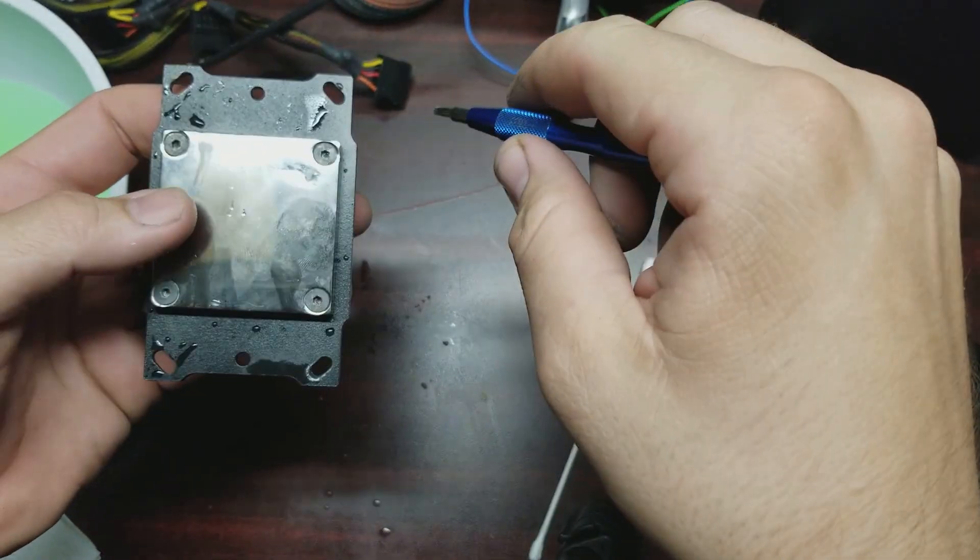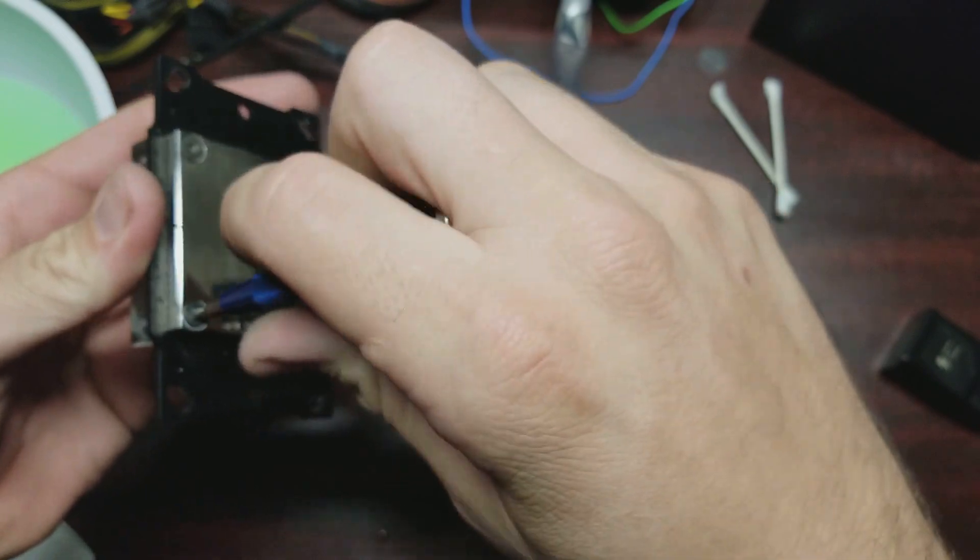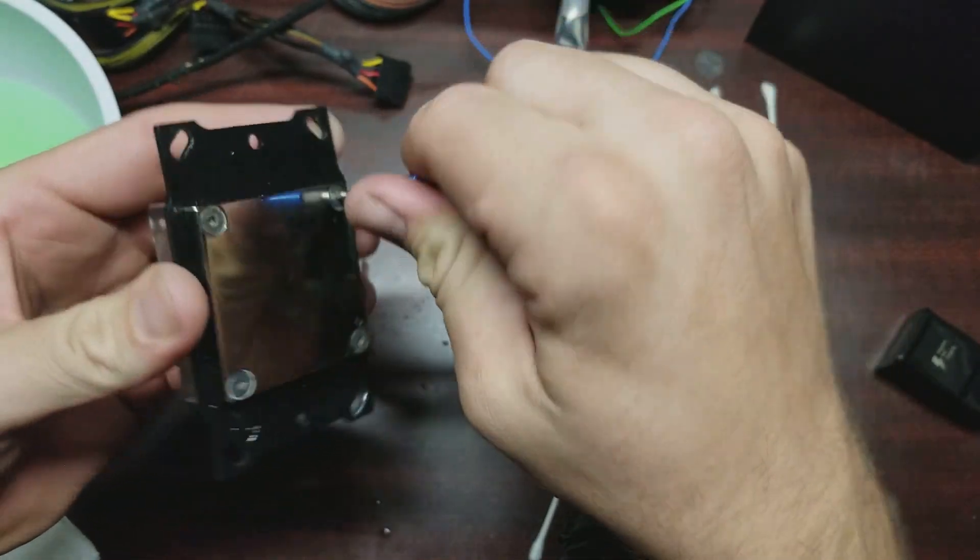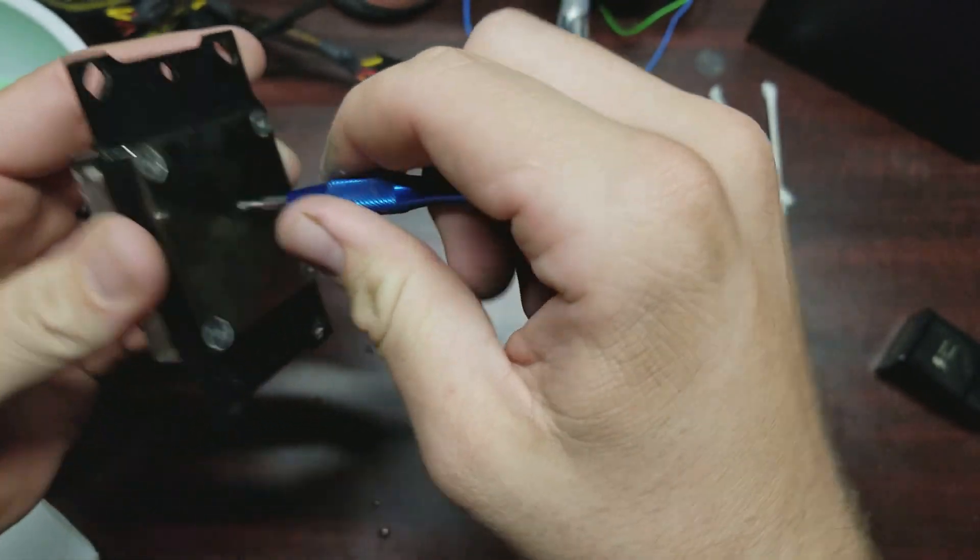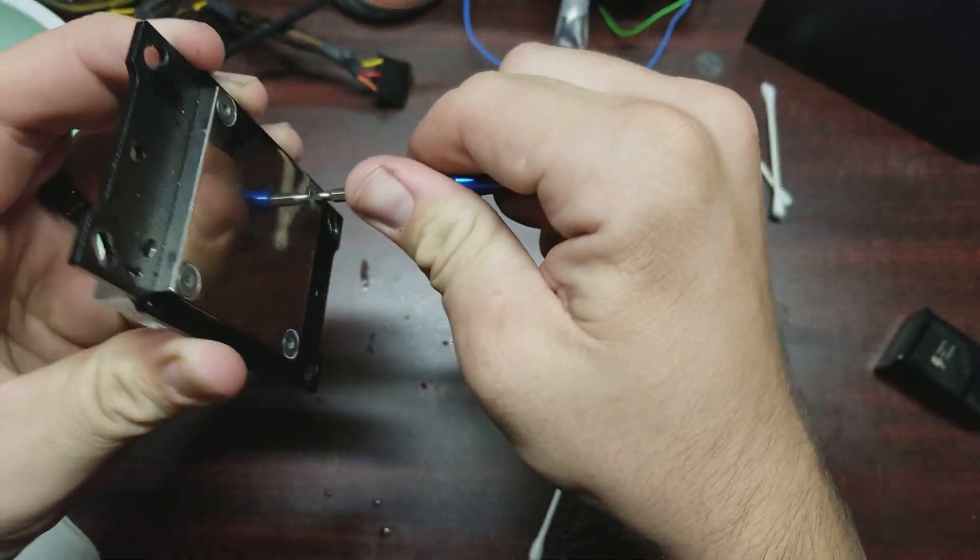And same thing, whenever you tighten up a CPU, start over here, give it about a quarter of a turn, a quarter of a turn, a quarter of a turn, and etc.